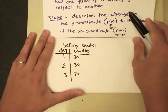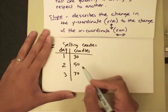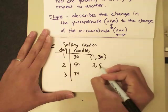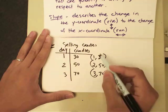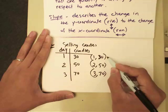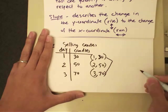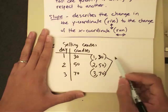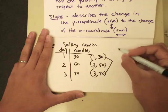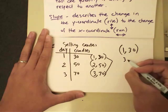You want to know: what is the rate of change — how fast am I selling my candies? The way we do it is to pick any two data points from your table. I can pick anything I want. So putting this into data point format: first day 30 pieces, second day 50 pieces, third day 70 pieces. I'm picking the first day and the third day to measure the overall change — this is like an average change for all three days.